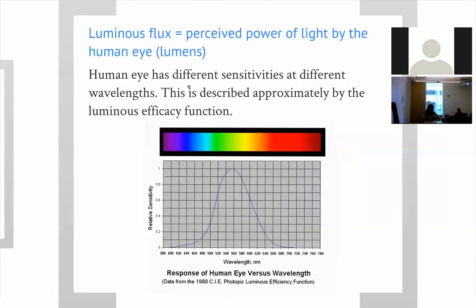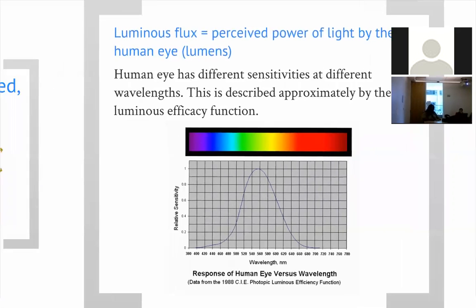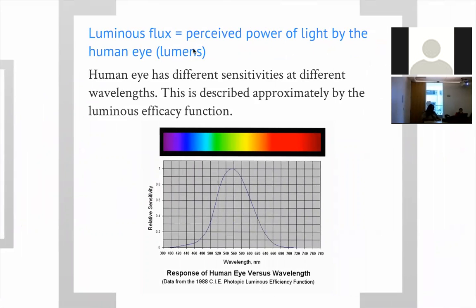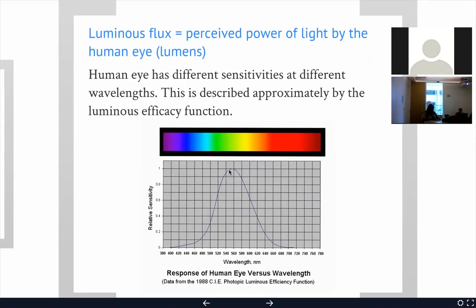The human eye has different sensitivity to different colors, which is defined by luminous flux — the perceived power of light by the human eye, measured in lumens. So radiant flux is measured in watts, while luminous flux is measured in lumens. The human eye's varying sensitivity across wavelengths is described by the luminous efficacy function. This is a relative sensitivity of the human eye as a function of wavelength.